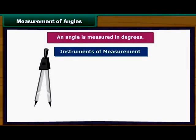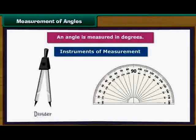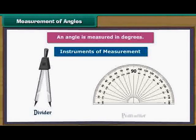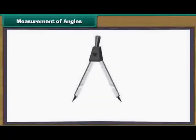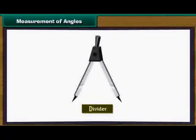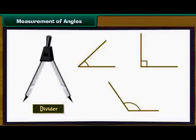Write letter L of the English alphabet. Place the divider on L and adjust it to coincide with L. Lift the divider up. The angle formed by it is a right angle.